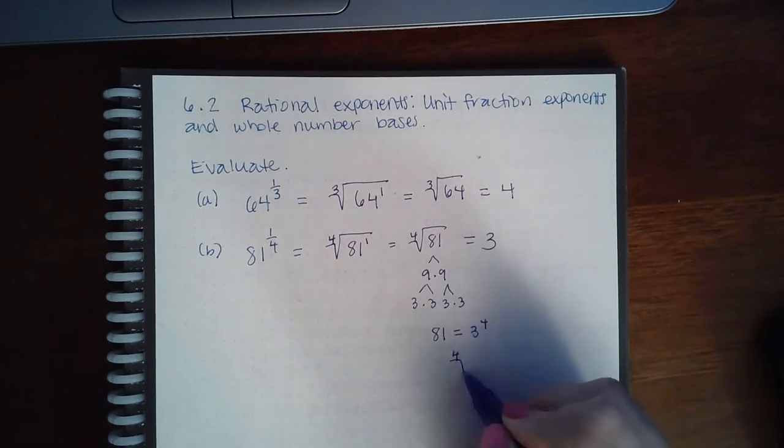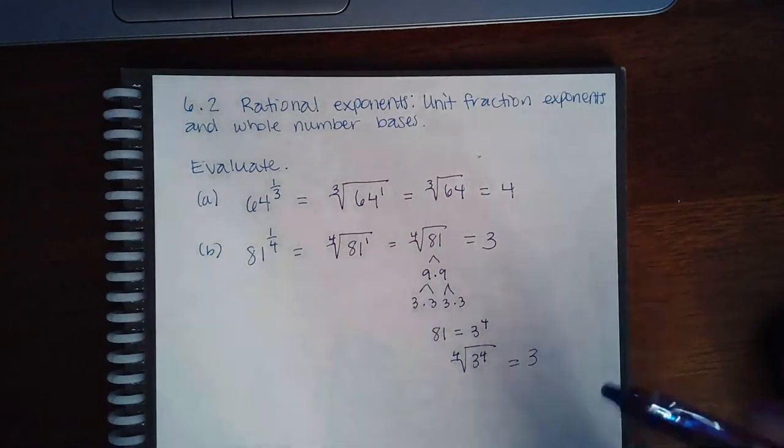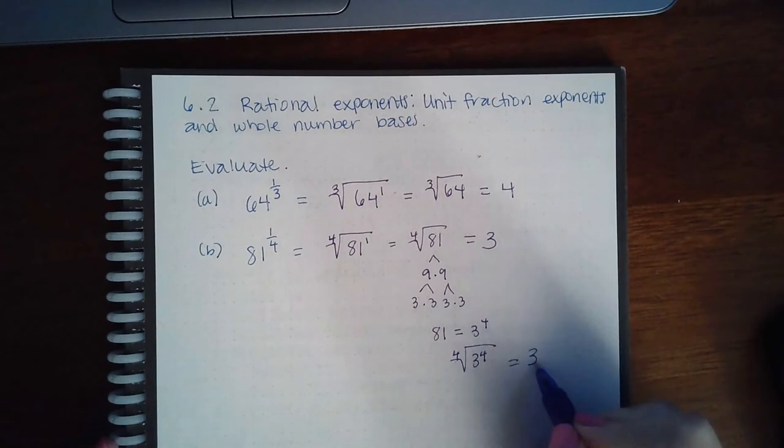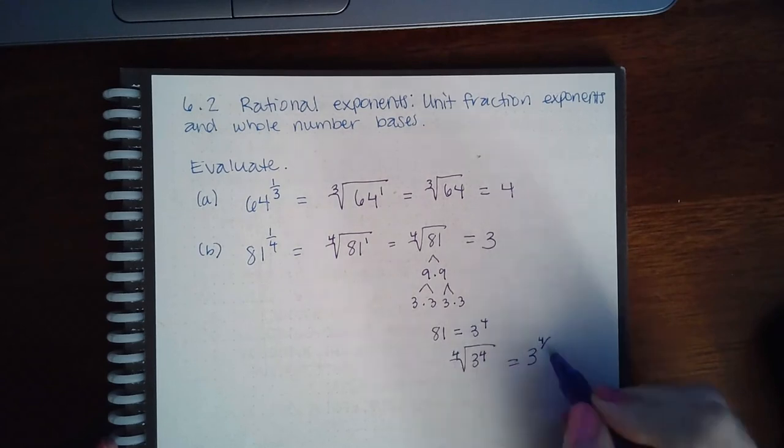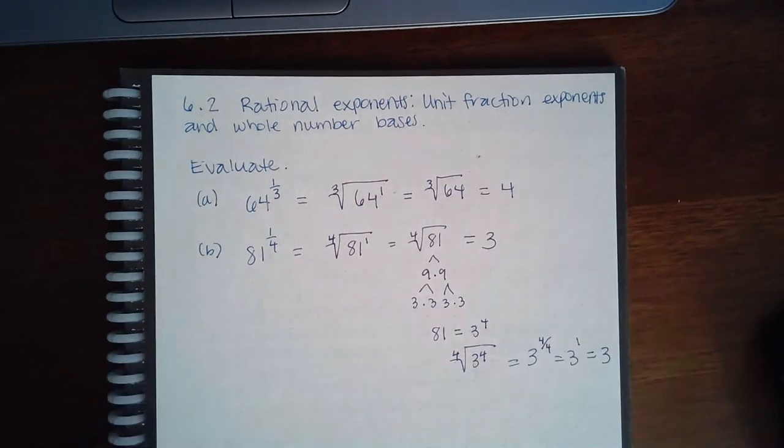And when you have the 4th root of 3 to the 4th, it's like these two things undo each other, and you just have 3. Or you can consider it as putting it into its exponent form. So you have this power divided by that index, you get 3 to the 1 if you reduce that fraction, which is just 3.